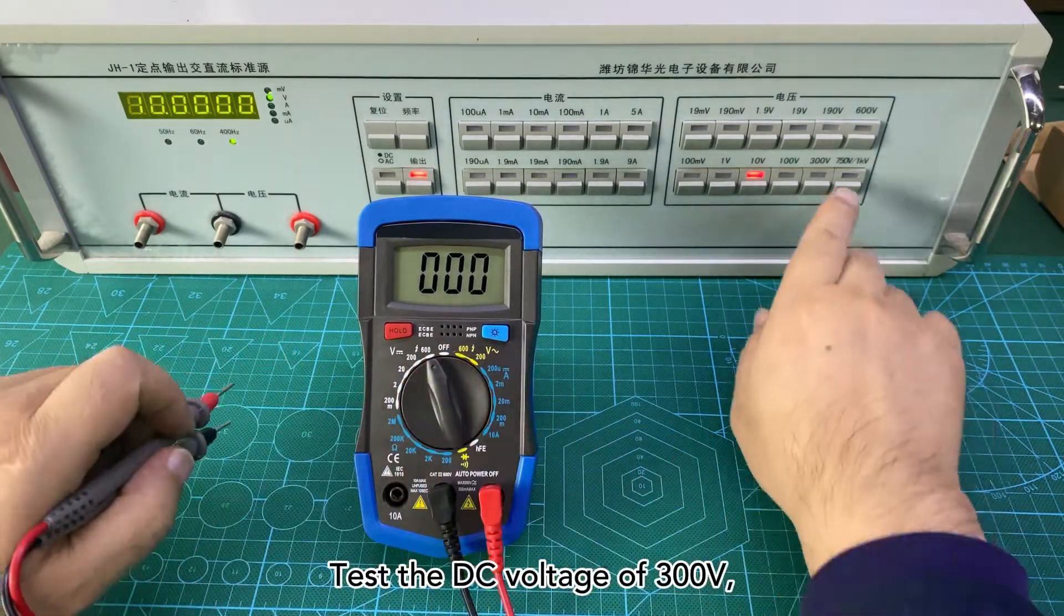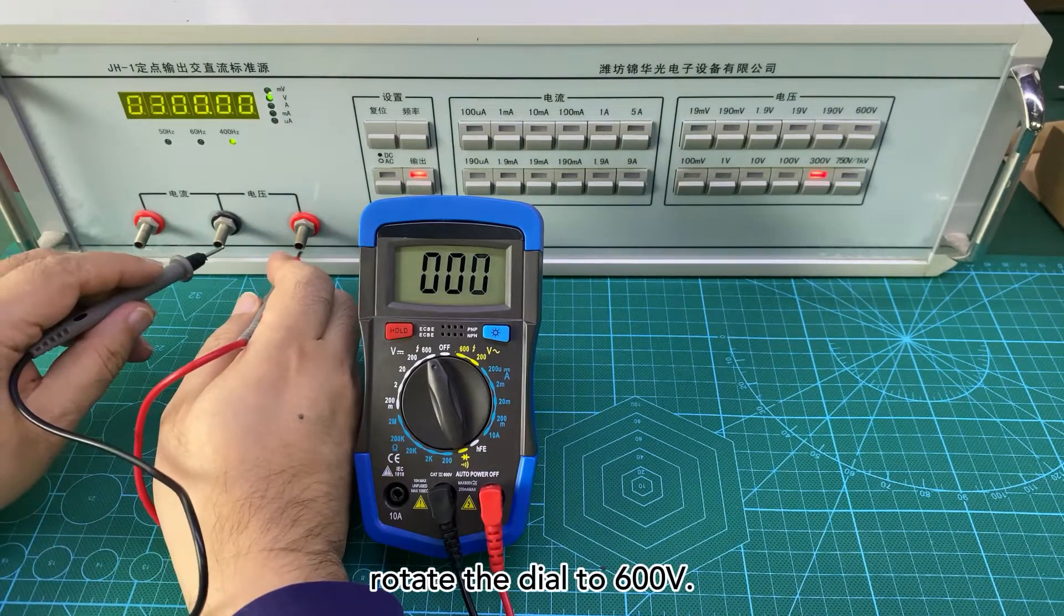Test the DC voltage of 300V. Rotate the dial to 600V.